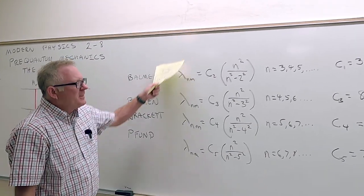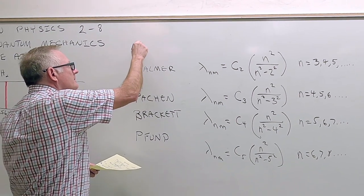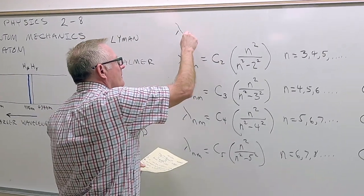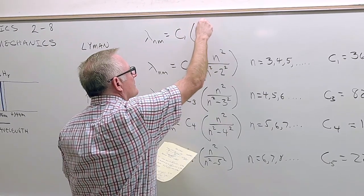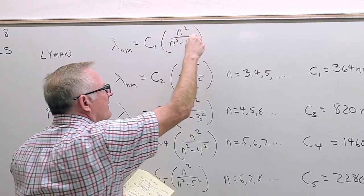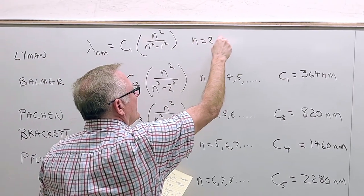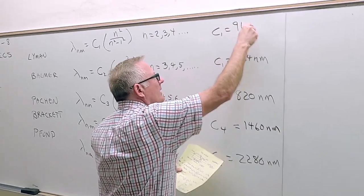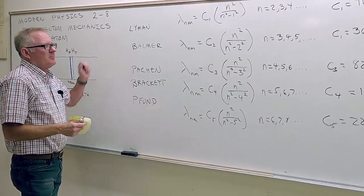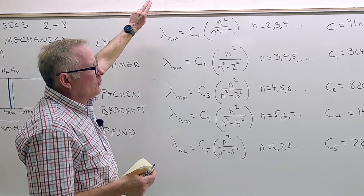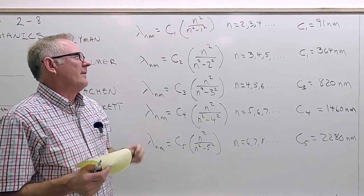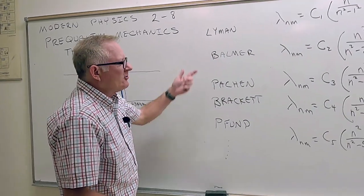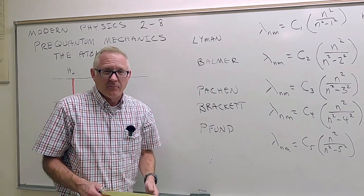It looks like there could be one going the other way too. Someone by the name of Lyman found a series in the ultraviolet part of the spectrum. His formula is: C1 times n² over (n² − 1²), where n can be 2, 3, 4, and so on. C1 is just 91 nanometers — well past the optical range. You'll never find another one further up because we're already down to n² − 1².